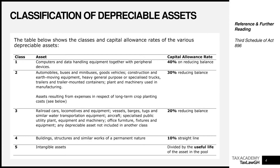Class three assets are railroad cars, locomotives and equipment, vessels, barges, tugs and similar water transport equipment, aircraft, specialized public utility plants, equipment and machinery, office furniture, fixtures and equipment, and any depreciable asset not included in another class. Class three assets attract capital allowance at 20% on a reducing balance basis.